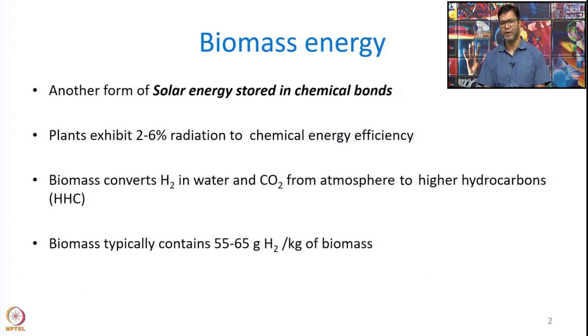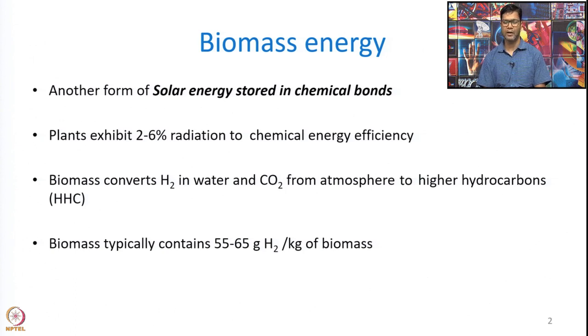Biomass is an indirect form of solar energy stored in chemical bonds. Plants typically exhibit 2 to 6 percent radiation-to-chemical energy efficiency. Through photosynthesis, biomass converts hydrogen in water and takes CO2 from the atmosphere to make higher hydrocarbons. Biomass typically contains 55 to 65 grams of hydrogen per kg of dry biomass — this bio-hydrogen is contained in chemical bonds with carbon, oxygen, and other organic molecules.